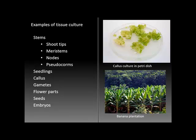Seedlings, callus tissue, gametes — that is, the pre-embryonic cells — and fertilized plant cells can be cultivated. Flower parts including the ovules and ovaries, seeds, and fertilized embryos are all examples of tissues that can be cultured. There will be a slide a little bit later about synthetic seeds.